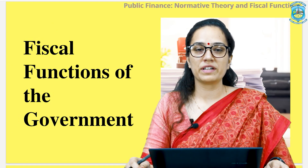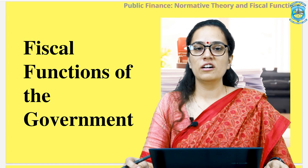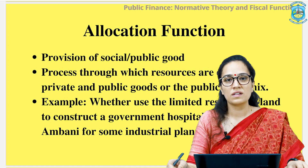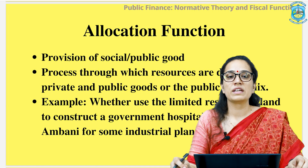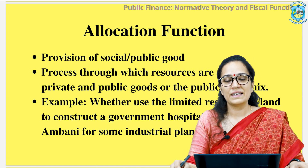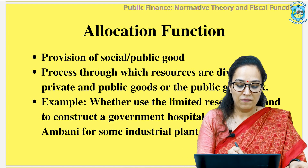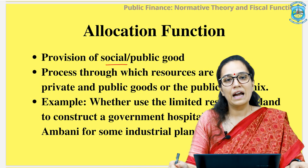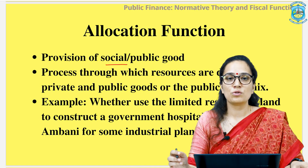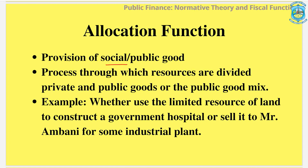Next, we turn to the fiscal functions of the government, which you can also understand as the role played by the government in an economy. The first core function is allocation. Every nation has limited resources and multiple investment choices, but given the scarce nature of its resources, the government cannot invest in all of them simultaneously. They have to choose whether to provide public goods or private goods, and within public goods, which set to provide. For example, given the limited resource of land, a government might choose whether to establish a hospital or lend it to create an industrial unit.